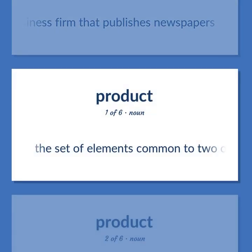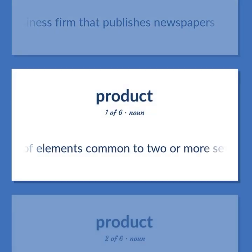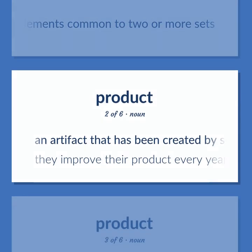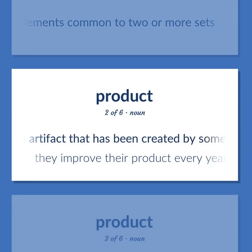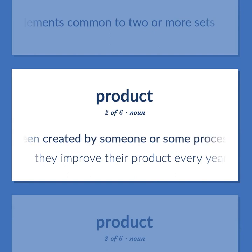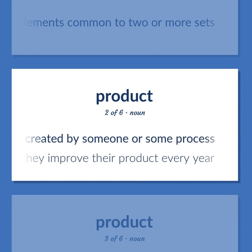Product (noun, Mathematics): The set of elements common to two or more sets. Also: an artifact that has been created by someone or some process. Example: They improve their product every year.